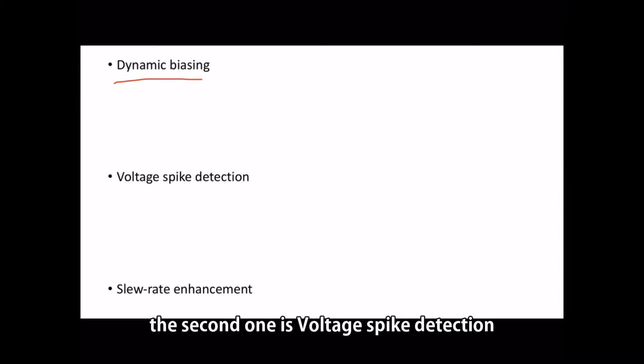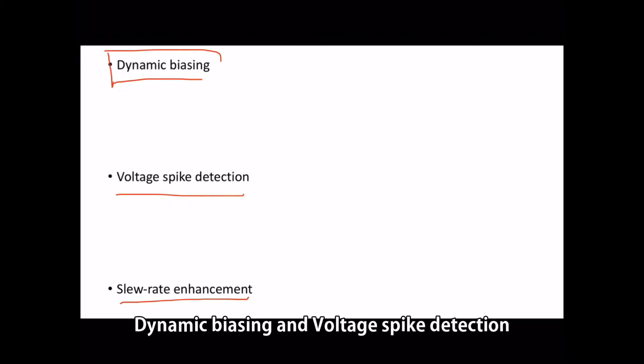The first one is dynamic biasing. The second one is voltage spike detection. And the third one is slew rate enhancement. Due to the time limitation of the video, the video will focus on dynamic biasing and voltage spike detection.